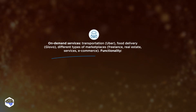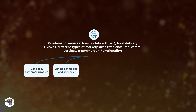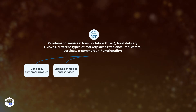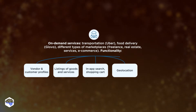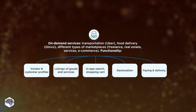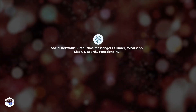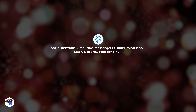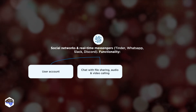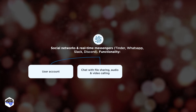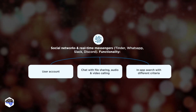Marketplace functionality includes vendor and customer profiles, listings of goods and services, in-app search, shopping cart, geolocation, and payment and delivery. Social networks and real-time messengers have functionality including user accounts, chat with file sharing, audio and video calling, and in-app search with different criteria.